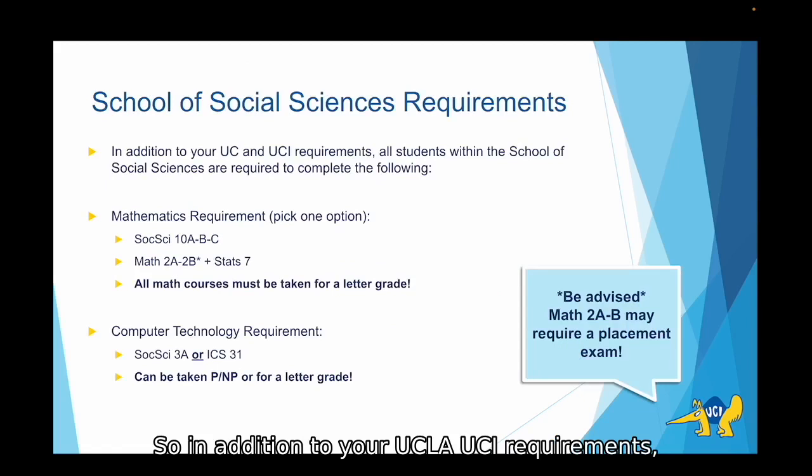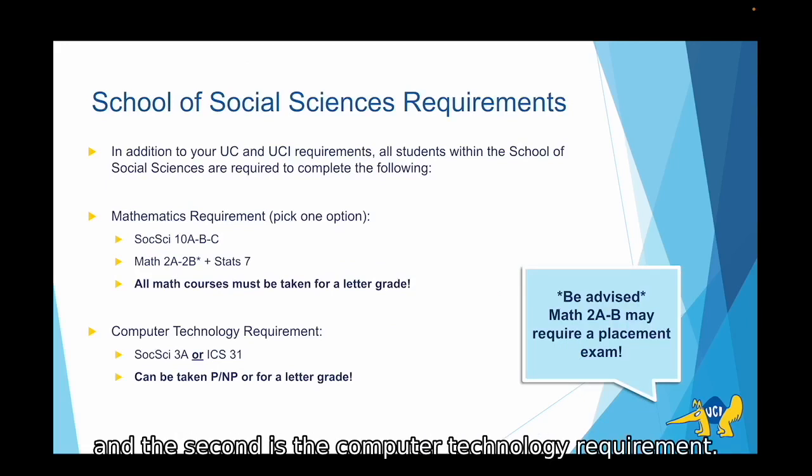In addition to your UC and UCI requirements, all social sciences majors must complete two School of Social Sciences requirements. The first is the mathematics requirement and the second is the computer technology requirement.